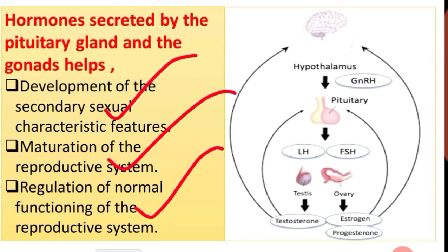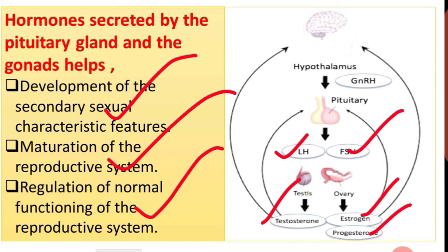The pituitary gland secretes LH and FSH. The gonads secrete testosterone from the male gonad, and estrogen and progesterone from the female gonad.